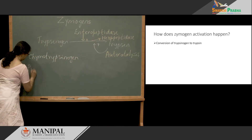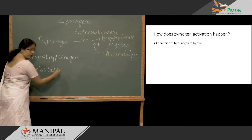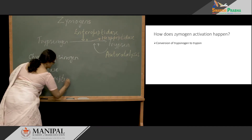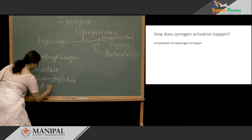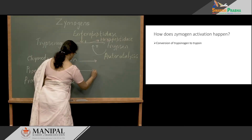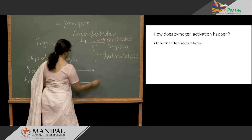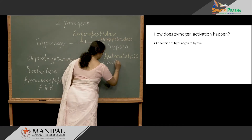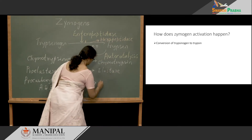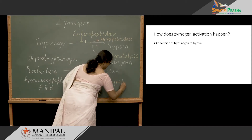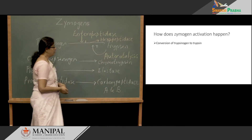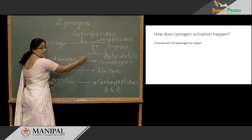The remaining pancreatic zymogens include chymotrypsinogen, proelastase, procarboxypeptidase A and B. They are all converted to their active forms. Trypsin is responsible for converting all these zymogens to their active form.